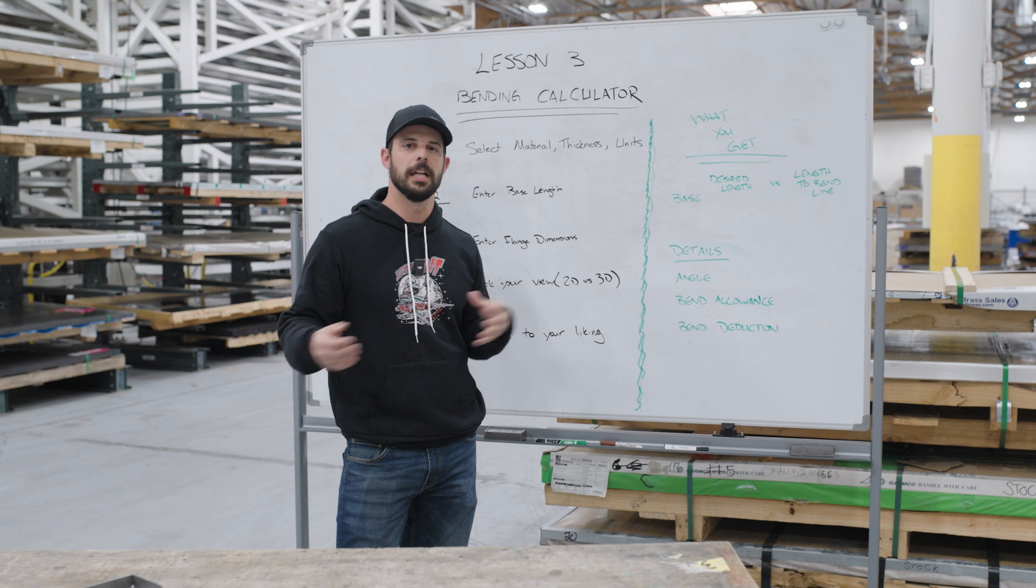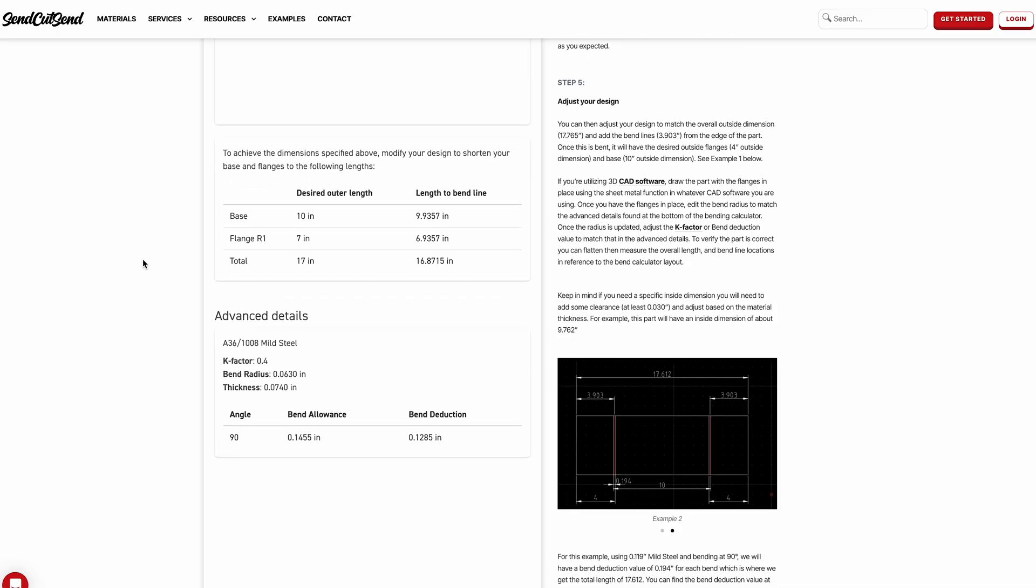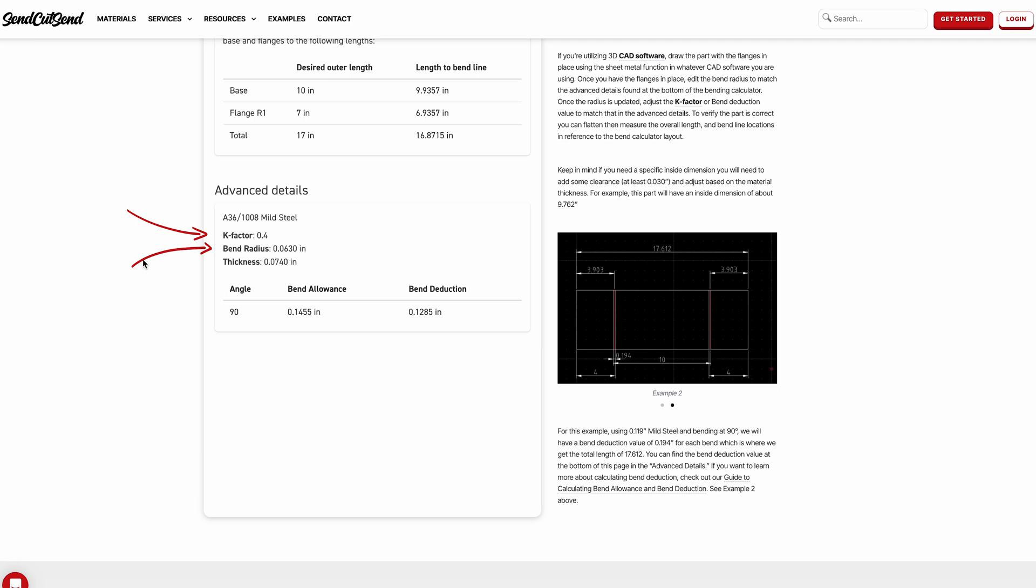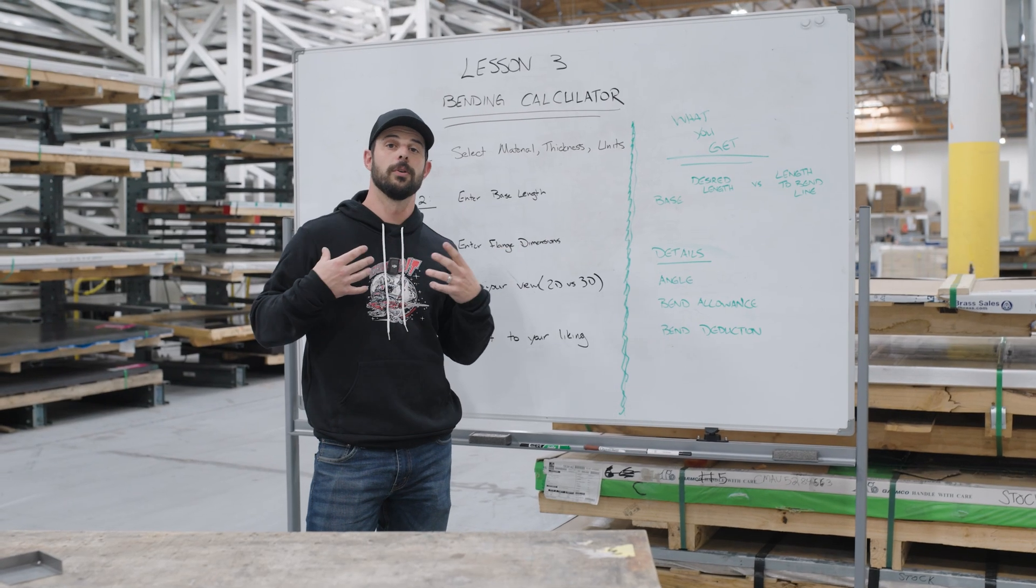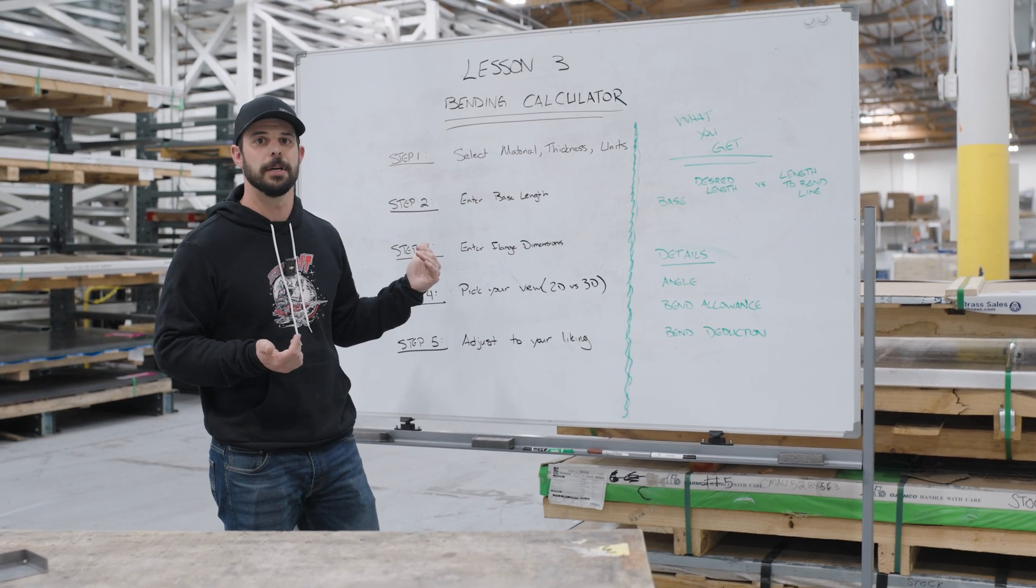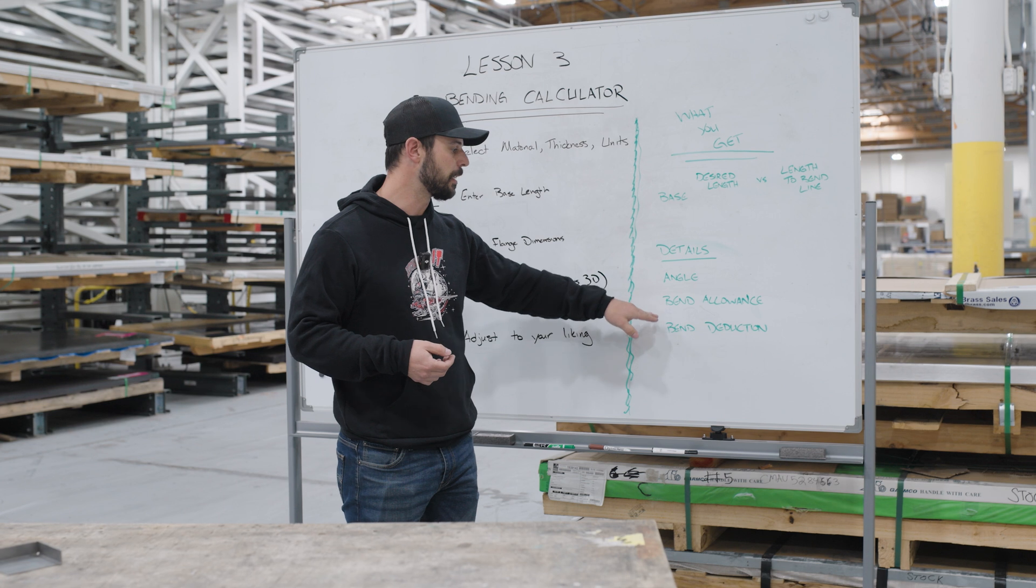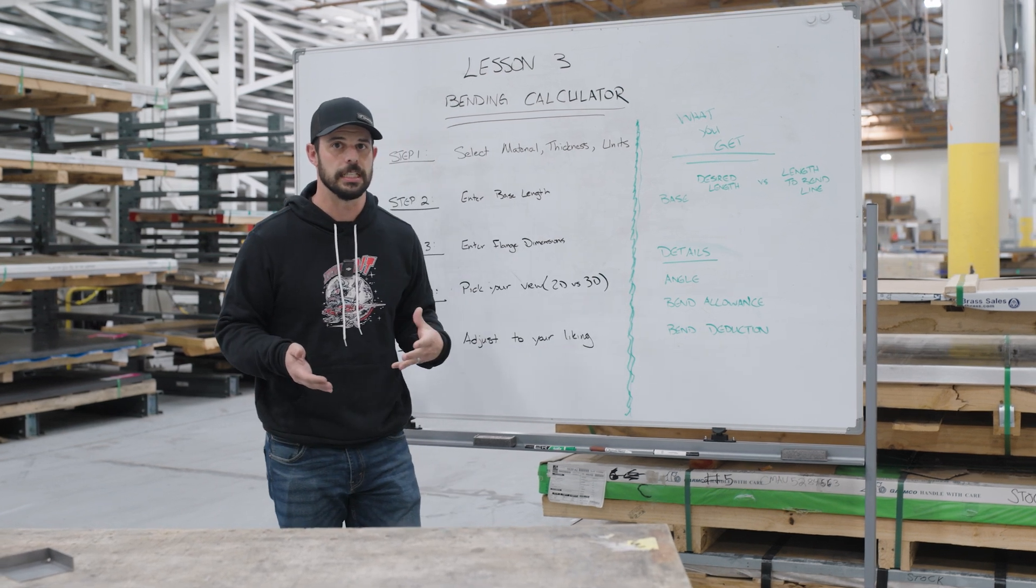Additionally, you're going to see a lot of different information based on the material that you picked in step one, which is K factor, the bend radius. And those are going to be chosen through our settings that are in our material guidelines. So you're going to see them pop up here in the bend calculator because that's what we're using. And additionally, you have bend allowance and bend deduction that you're going to see in there.